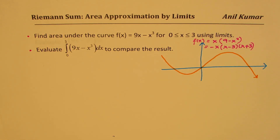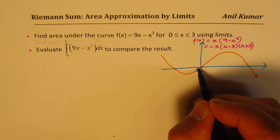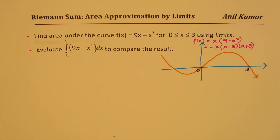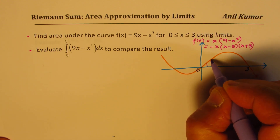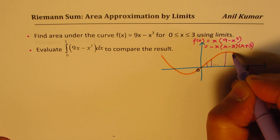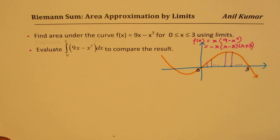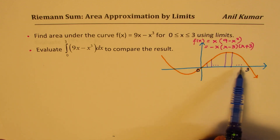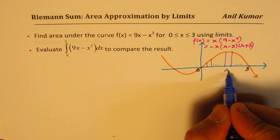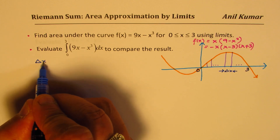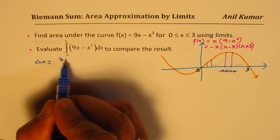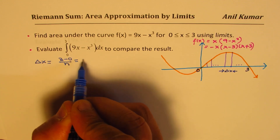We need to find the area between 0 and 3. This interval will be divided into a series of rectangles, and we are going to have n rectangles in this series. The width of each rectangle is delta x, which equals 3 minus 0 divided by n, giving us delta x = 3 over n.